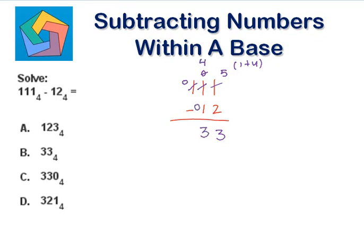And 0 minus 0 is 0. So this is 33 to the base 4. So B, 33 to the base 4, is the answer.